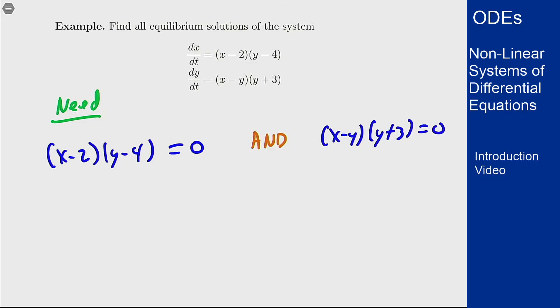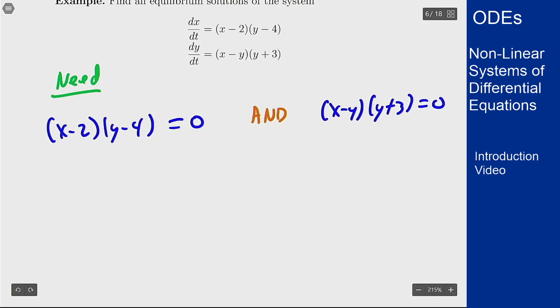So these we can solve sort of independently on their own. Right we can tell that this first one is going to be zero, we're either going to have x equals 2 or y equals 4. And on the other side we're going to have either x equals y or y equals minus 3. And now to get all the solutions we want to figure out at what different coordinate points are both of these things true.